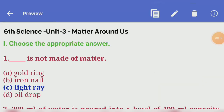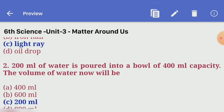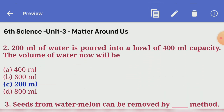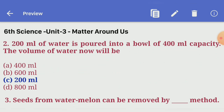Choose the correct answer. First one: this is not made of matter. Answer C — light ray. Second one: 200 ml of water is poured into a bowl of 400 ml capacity. The volume of water now will be answer C — 200 ml.